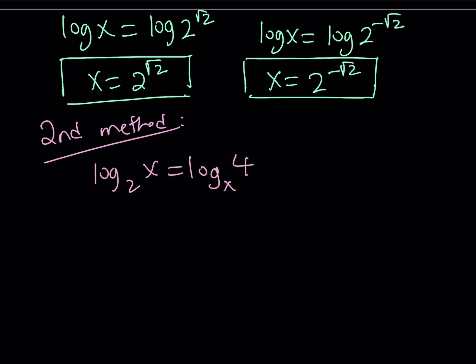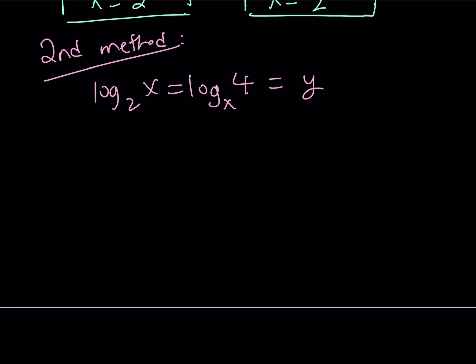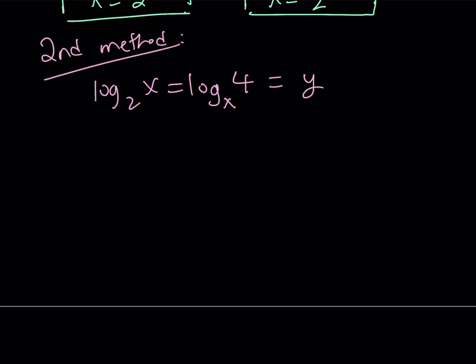Okay. So, these two quantities are equal. Why not set them equal to something else, like y? And don't ask why. It's just a variable, right? Okay. So, from here, by using the definition of logarithms, we can say that 2 to the power y is equal to x from the first equation here.